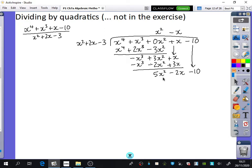And then 5, because the 5x squared divided by x squared is 5. Multiply by 5, and you get 5x squared plus 10x minus 15. Minus 2 minus 10 is minus 12x, and then minus 10 minus minus 15 is 5.